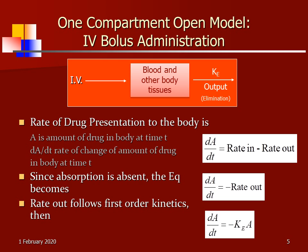The rate of drug presentation to the body when given by intravenous bolus administration is: dA/dt = rate in minus rate out. In the case of intravenous bolus administration, the rate in is zero. Hence the equation becomes: dA/dt = rate out. Since the rate out follows first order kinetics, the final equation is dA/dt = −Ke · A.